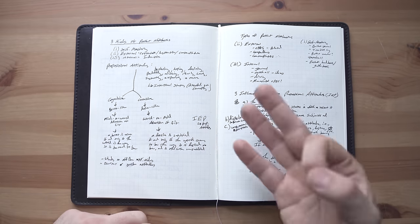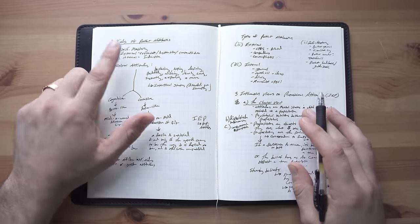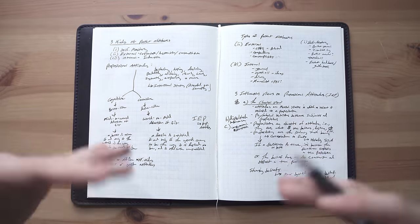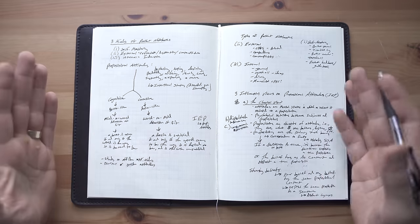Okay, so first things first, there are three kinds of pocket notebooks, three categories of pocket notebooks. The first one is self-mastery. The second is external reflection, inspiration, contemplation. And the third one is internal ideation.